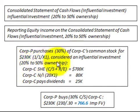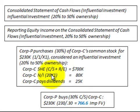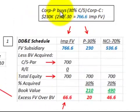Since they purchased 30 percent, this falls within the 20 to 50 percent ownership range. At the time of purchase, corporation C had shareholders' equity — common stock plus retained earnings — of $700,000. Corporation C had net income for the year 20X1 of $80,000, and also paid a dividend of $25,000 for the year.